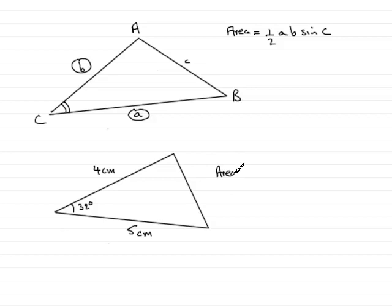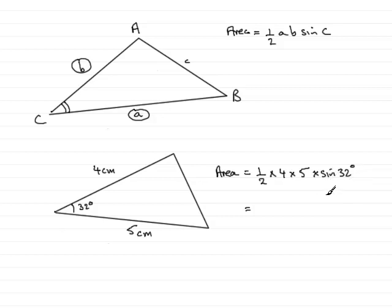The area would equal a half the product of the two sides, so that's 4 times 5, times the sine of the included angle, so multiplied by the sine of 32 degrees. Make sure your calculator is in degrees mode, because we're calculating the trigonometric function sine of 32 degrees. If you use your calculator, what you find is 5.299 and so on, so the area is going to be roughly 5.3 centimetres squared, rounded to one decimal place.